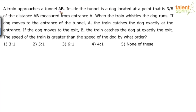A train approaches a tunnel AB. Inside the tunnel is a dog located at a point that is 3/8 of the distance AB measured from entrance A. When the train whistles, the dog runs. If the dog moves to entrance A, the train catches the dog exactly at the entrance. If the dog moves to exit B, the train catches the dog exactly at the exit. The speed of the train is greater than the speed of the dog by what order?